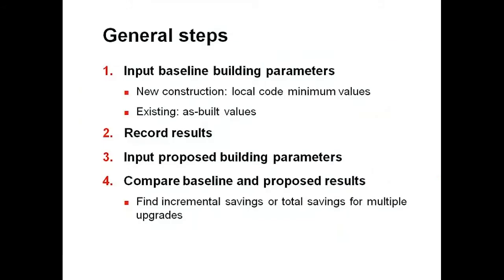What are the general steps for using the Back of the Envelope Calculator? Step one is to input your baseline building parameters. For new construction, that usually means inputting the local code minimum values. For an existing building, that means finding the as-built values and entering them. Once you have your building baseline established, record the results for later comparison. Then step three is to input the proposed building parameters — what upgrades are you willing to make, and how will they affect the resulting energy and cost? Record the proposed building results and find the incremental savings between the baseline and your proposed. You can look at individual measures or a host of measures to see how multiple upgrades affect building energy use.